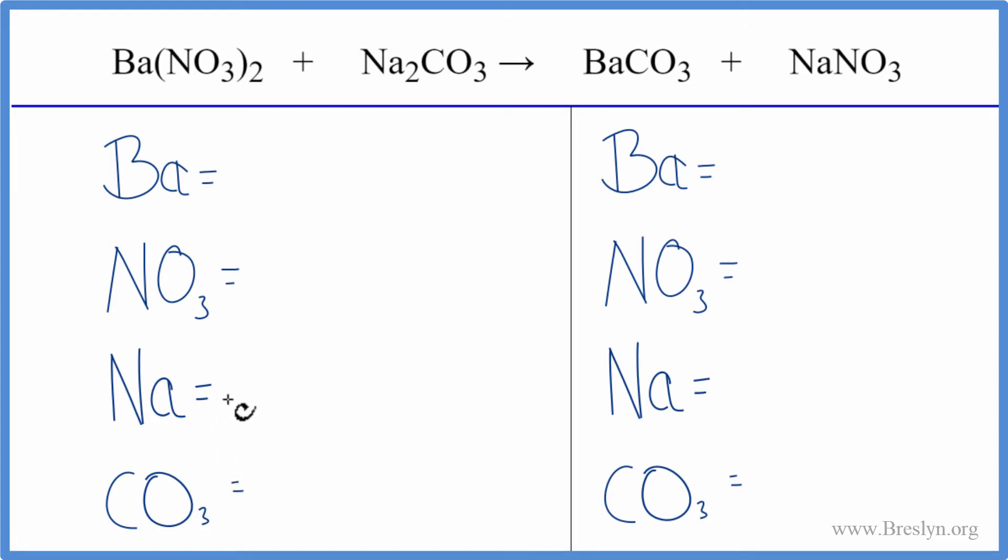Let's count the atoms. On the reactant side: one barium, one nitrate times two equals two nitrates, two sodium atoms, and one carbonate (CO₃). On the product side: one barium, one nitrate, one sodium, and one carbonate.